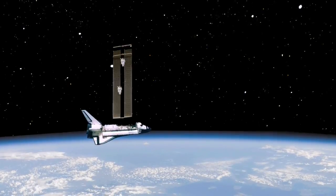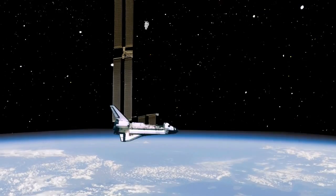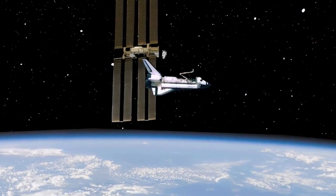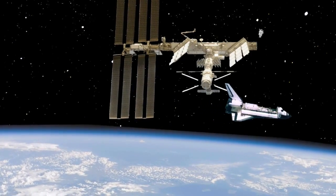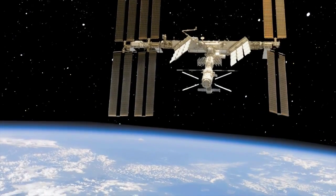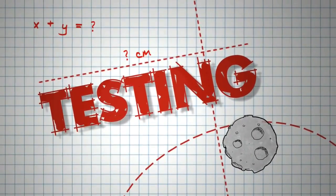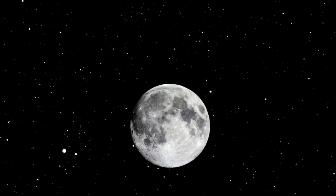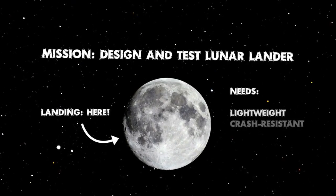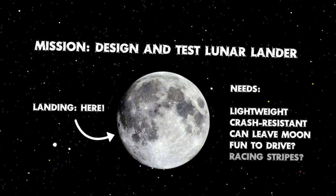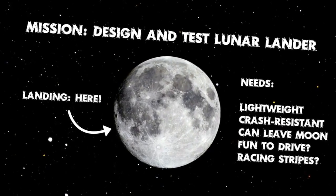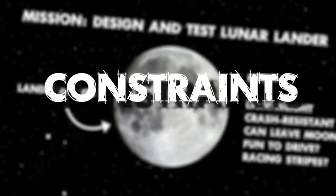And how do you design something that can do the same thing over and over and over again? You test it. Before we start testing though, we should make sure we know a little bit about our mission. That way we can figure out what we're testing as well as what we're allowed to do to improve it. These are called constraints.